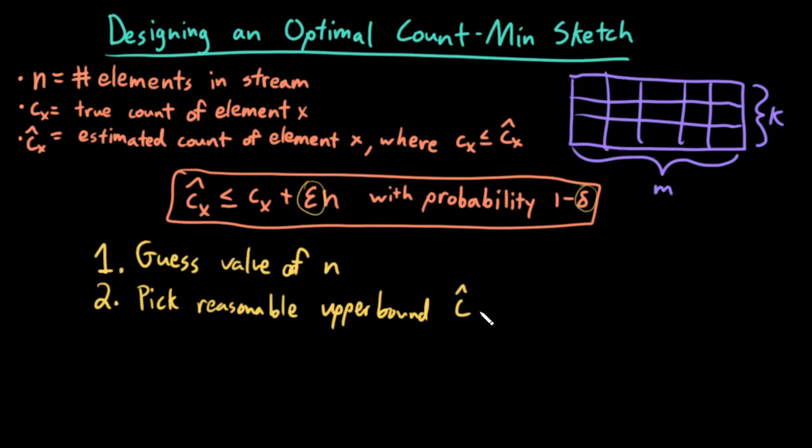In other words, the estimated count minus the true count, what is a reasonable upper bound? Which, remember, is equal to this. So pick this. And because I already have chosen n, if I pick this, this dictates what epsilon needs to be. Right, so n I guessed, I defined this range, and I already guessed n—the range and n define epsilon.